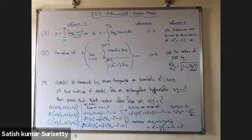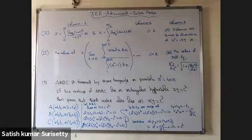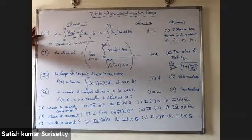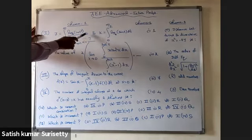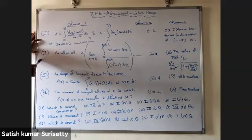A column matching problem follows with three columns. Column I: (i) J = ∫₀^∞ log(1+t²)/(1+t²) dt and K = ∫₀^(π/2) log(sin t) dt; if J + αK = 0 find α. (ii) The value of 4 · lim(x→0) [∫₀^(tan x) t² dt / ∫₁^(sec x) (x²−1) dx].